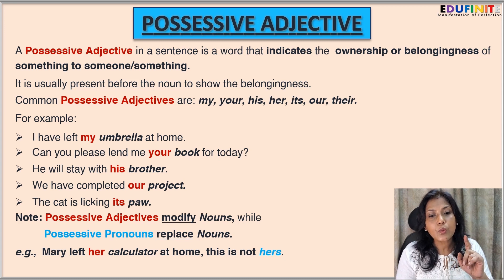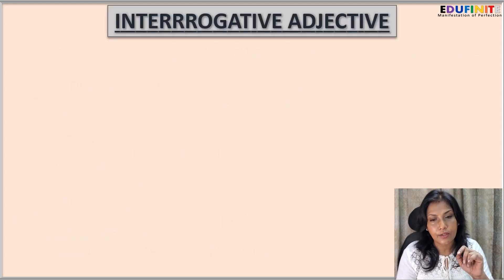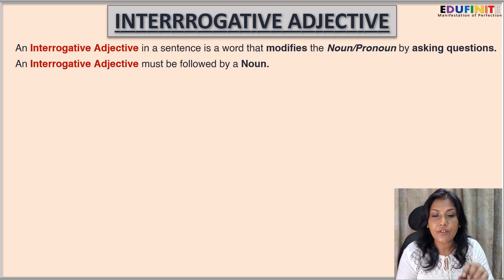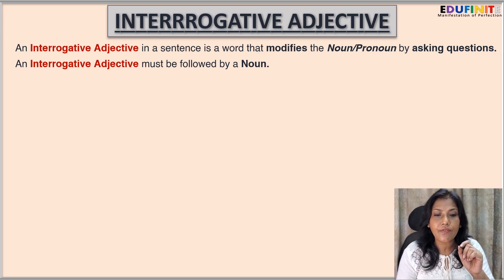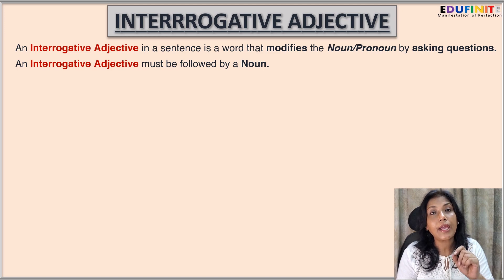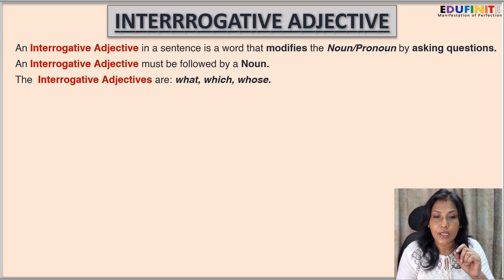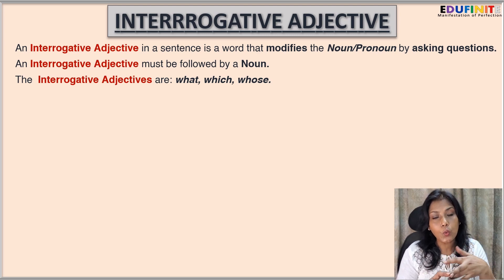The next type is interrogative adjective. An interrogative adjective in a sentence is a word that modifies the noun or pronoun by asking questions. An interrogative adjective must be followed by a noun. The interrogative adjectives are: what, which, whose.